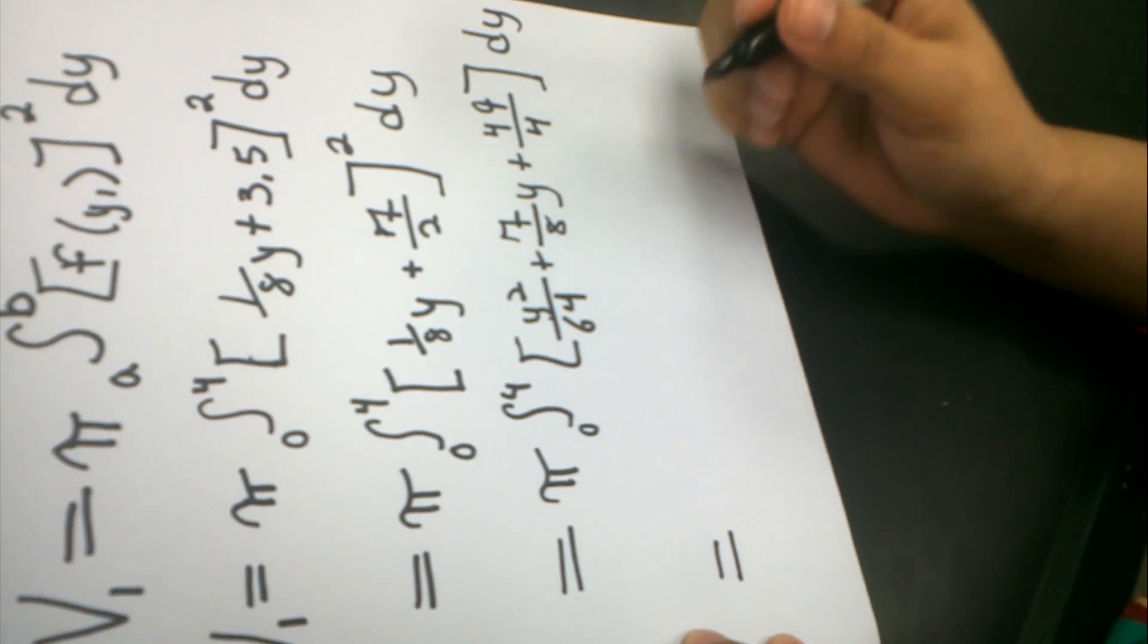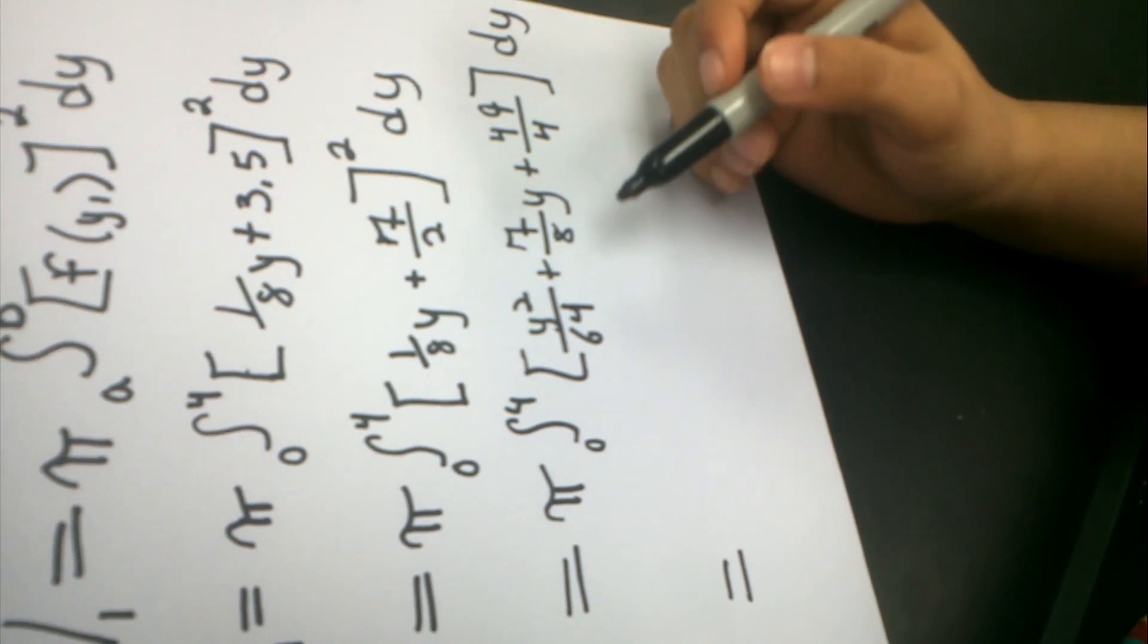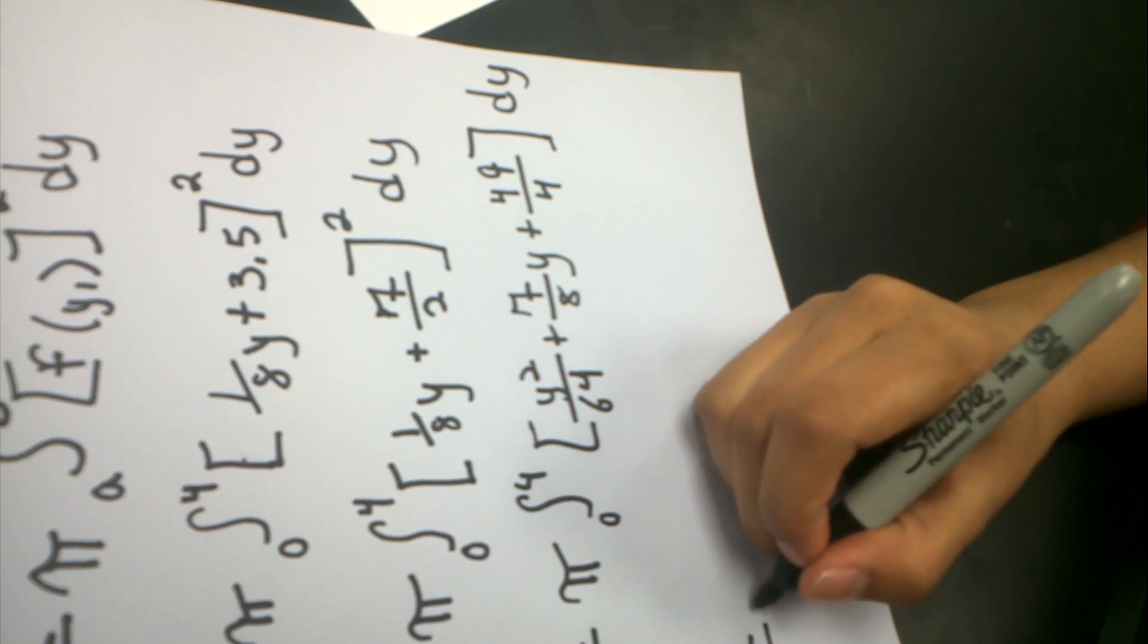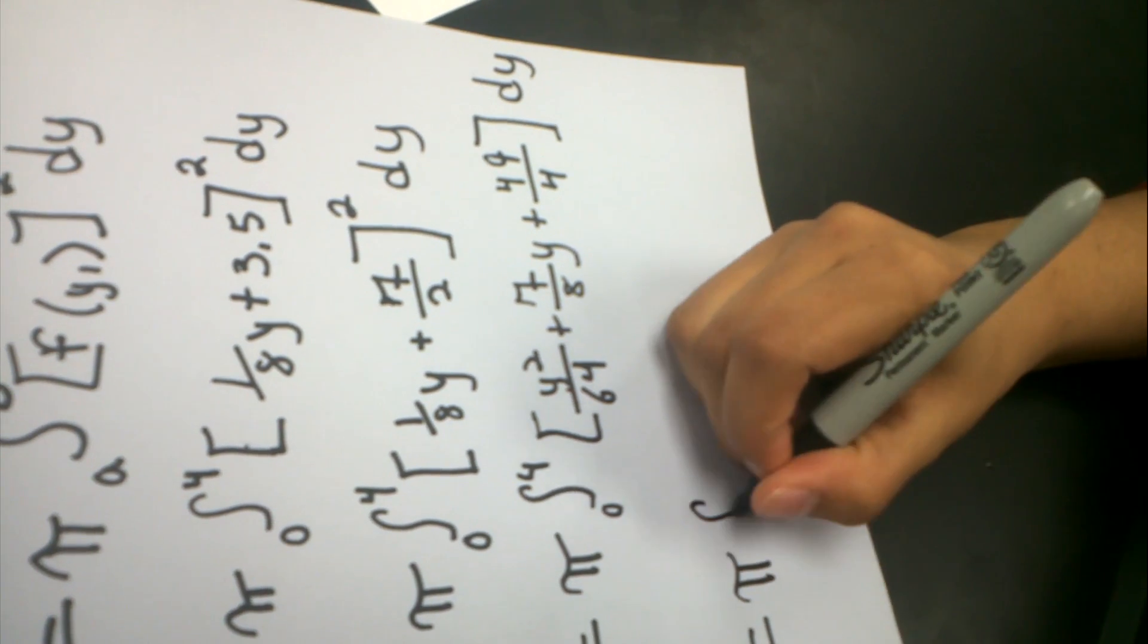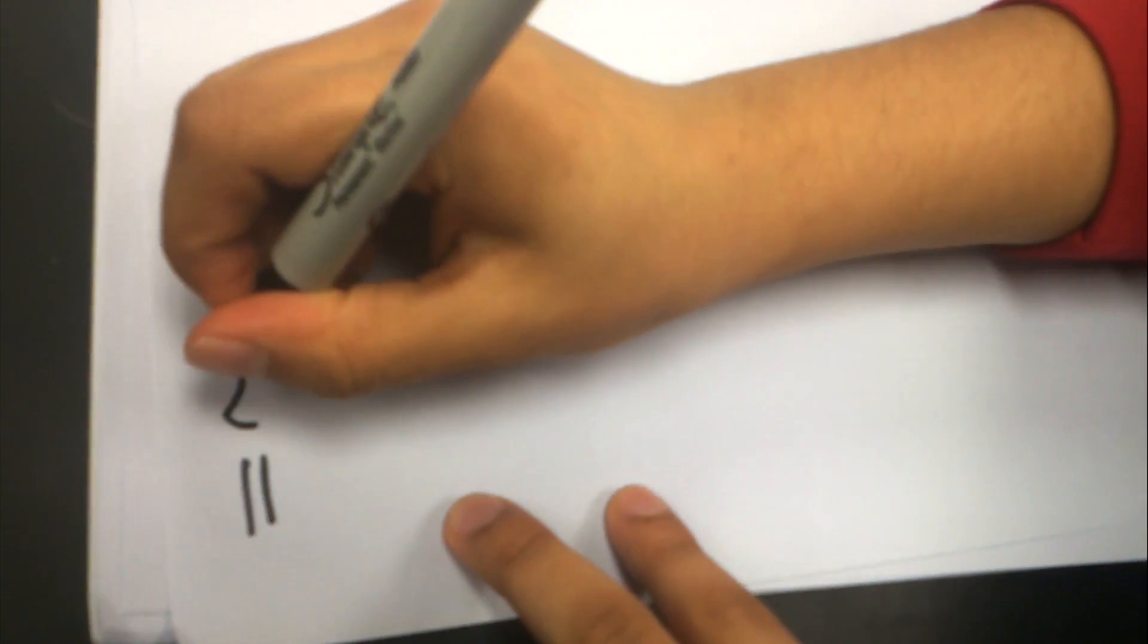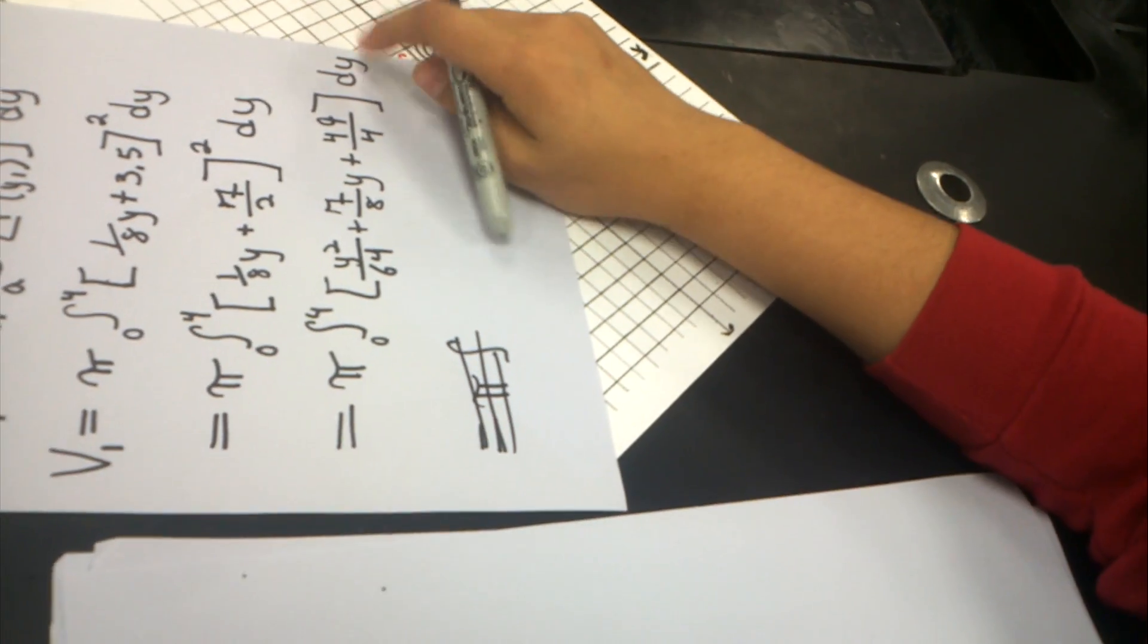Now what I'm going to do is I'm going to integrate for y. So for the first one, that would be... wait, I'm going to bring this down first, of course. Can't leave this out. So now I'm going to integrate for y, which is equal to π. Since I'm integrating for y, from 0, 4 is not going to be here anymore. It's going to come onto this side because I'm already integrating, so this leaves the picture.